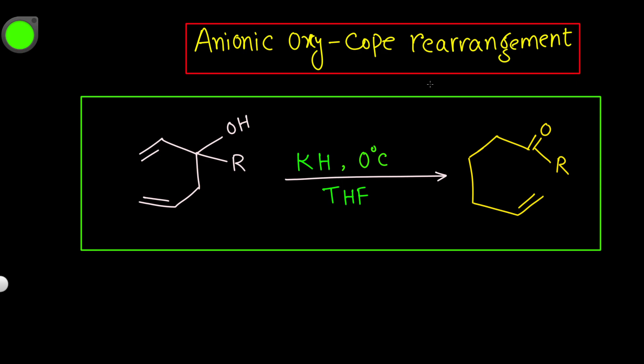In this session we will continue our legacy of organic named reaction series. We have already completed 26-27 organic named reactions on my YouTube channel — you can check in the playlist. Today we will discuss a reaction related to the previous Cope rearrangement, that is the anionic oxy Cope rearrangement. The anionic oxy Cope rearrangement is basically a type of Cope rearrangement — just a variety of it.